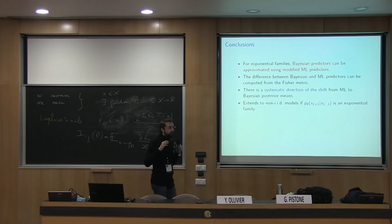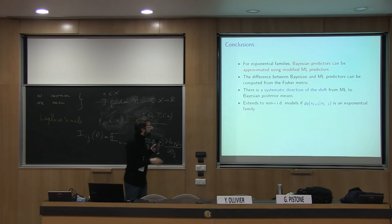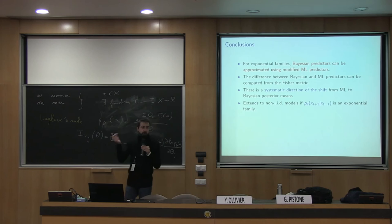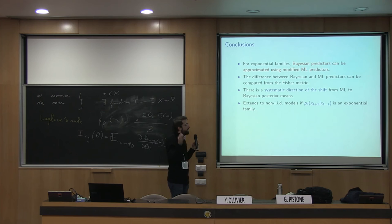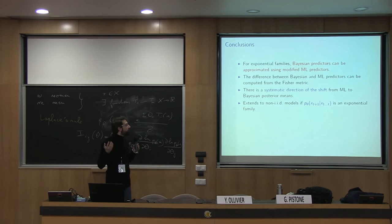If you have a statistical manifold, there is a vector field telling you that on average, Bayesian predictors are a little bit more in that direction. Finally, at least formally in the physicist sense, this extends to non-IID models. If you have, for instance, a Markov model such that at each time P_theta of X_{t+1} knowing the past data belongs to an exponential family, that typically covers Markov models. Thank you.